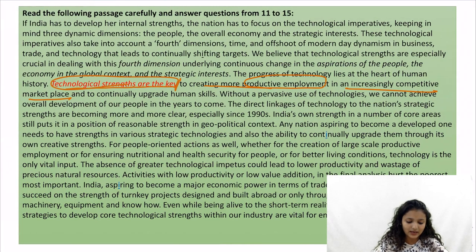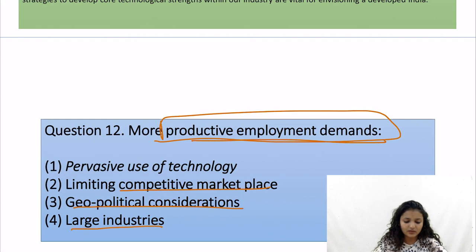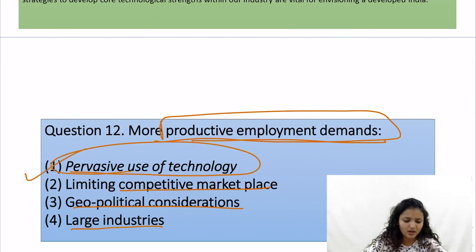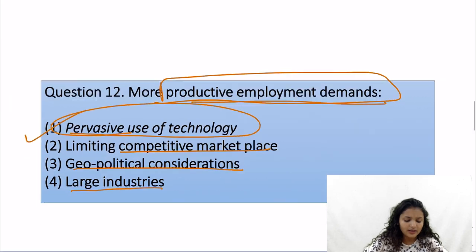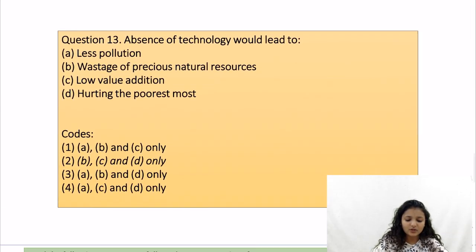The answer options are: limiting competitive marketplace, geopolitical considerations, large industries, and pervasive views of technology. The correct answer is option number 1. Then we have question number 13: absence of technology would lead to — here 'absence of technology' is the keyword.